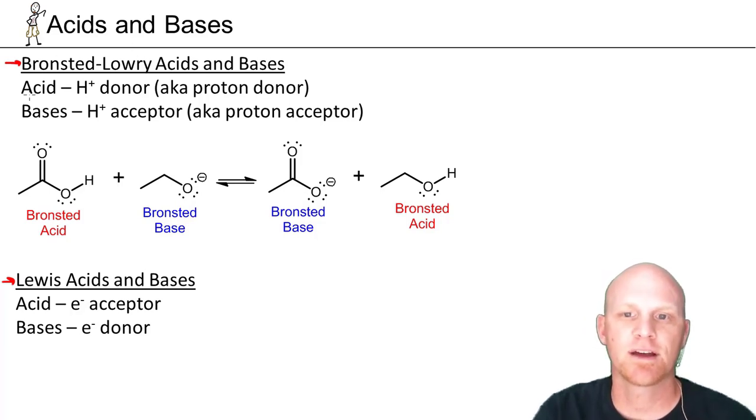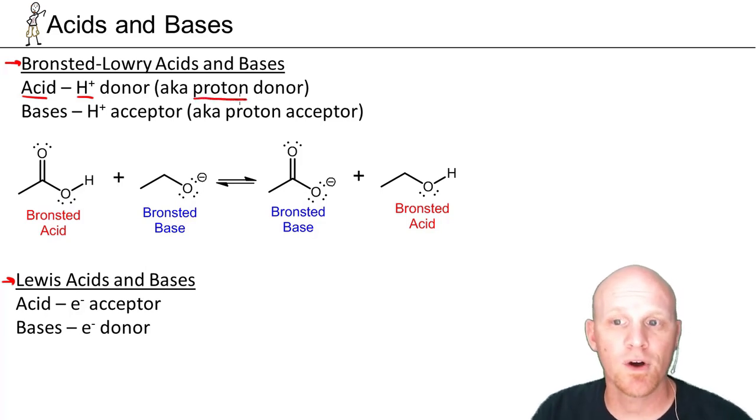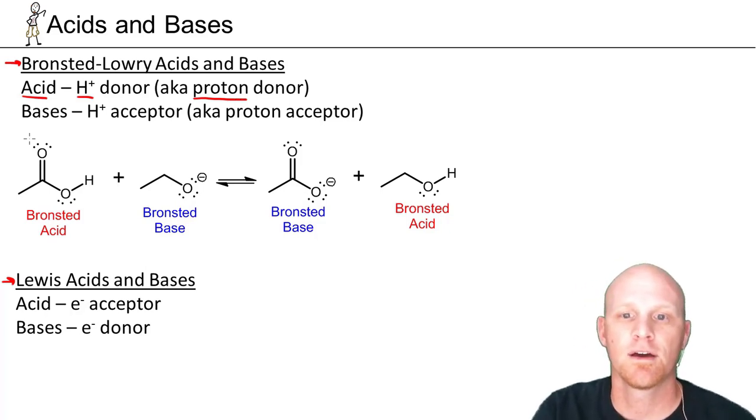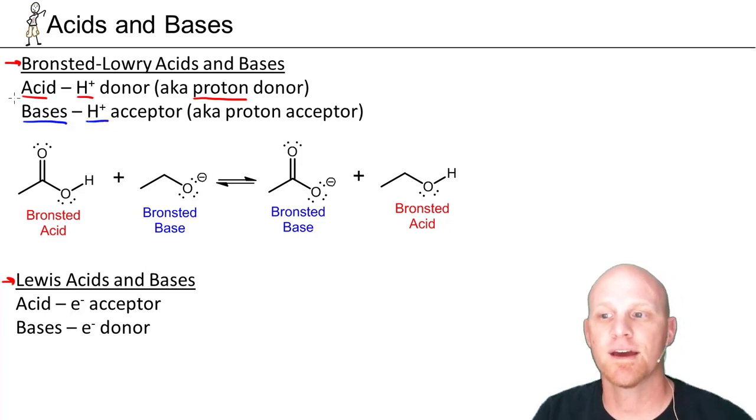Let's take a look at that Bronsted-Lowry definition. They said an acid is an H plus ion donor. You should realize that an H plus ion is also called a proton. Hydrogen's got one proton, one electron. If it loses the electron, it becomes H plus. And all you've got left is a proton. So an H plus ion is simply a proton. H plus donor or proton donor, same diff. And conversely, they said a base is an H plus ion acceptor, a.k.a. proton acceptor.